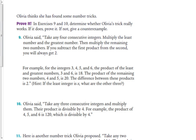So in this first problem, Olivia says, take any 4 consecutive integers, multiply the least number and the greatest number, then multiply the remaining 2 numbers. If you subtract the first product from the second, you will always get 2. So we need to somehow represent 4 consecutive integers. Let's let x be the first of those. The next consecutive integer is just one more than that, so we can call that x plus 1. The third one we can call x plus 2, and the fourth we can call x plus 3.